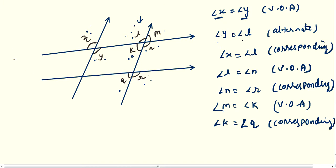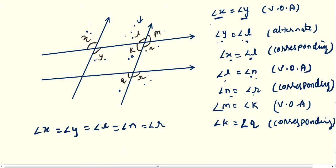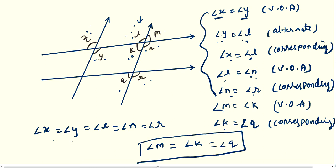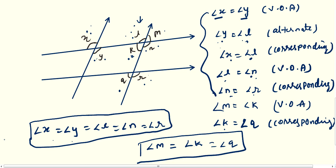So first, angle x equals angle y, and angle y equals angle l, and angle l equals angle n, and angle n equals angle r. So angle x, angle y, angle l, angle n, and angle r are all equal to each other. The second group is angle m equals angle k and angle k equals angle q, so these three angles are equal to each other. This is how you identify which angles are equal.